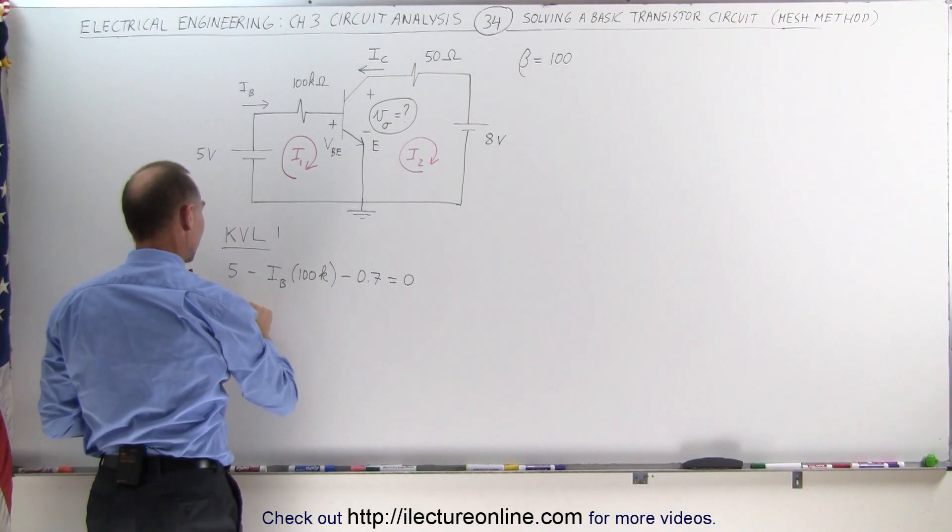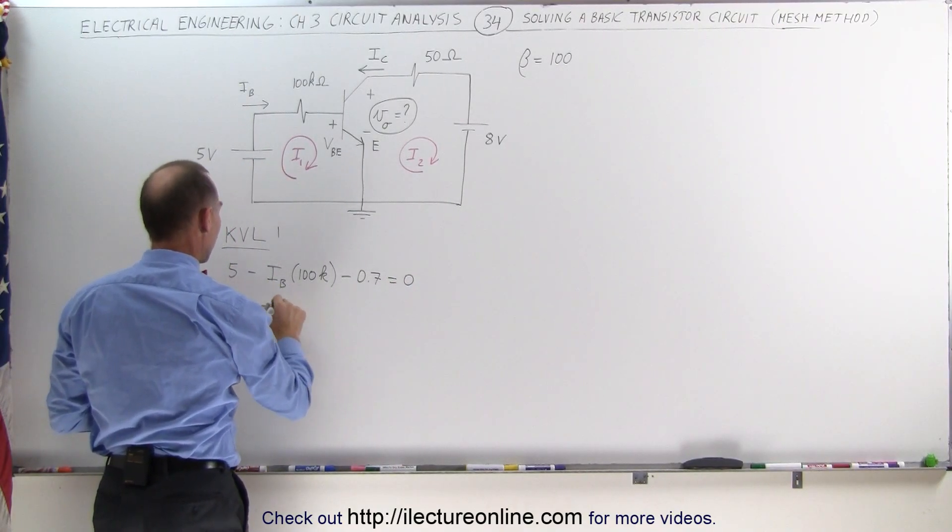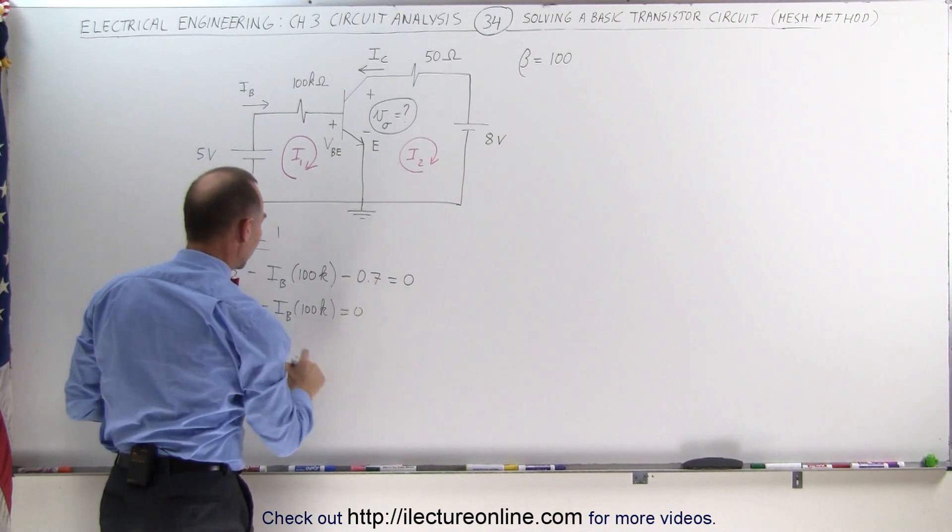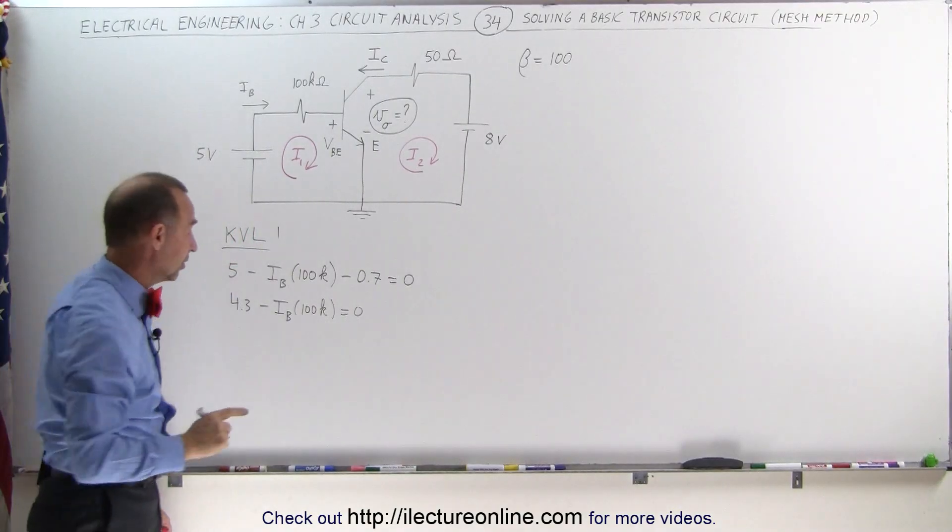Subtracting this from that, we can say that 4.3 volts minus I sub B times 100k is equal to zero, which allows us to solve for the base current in this case.